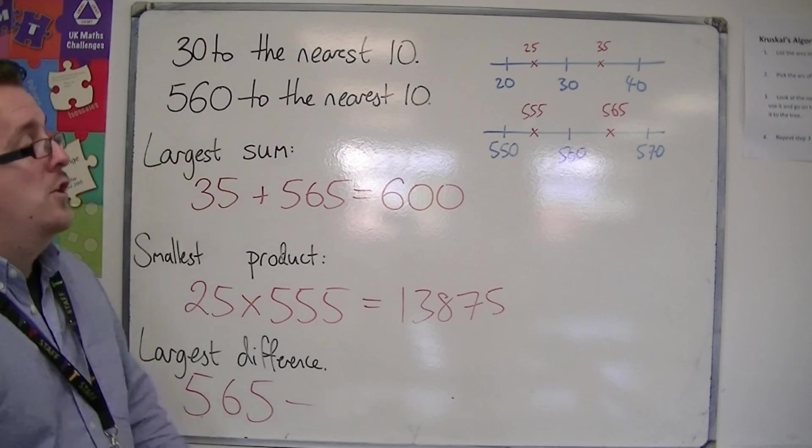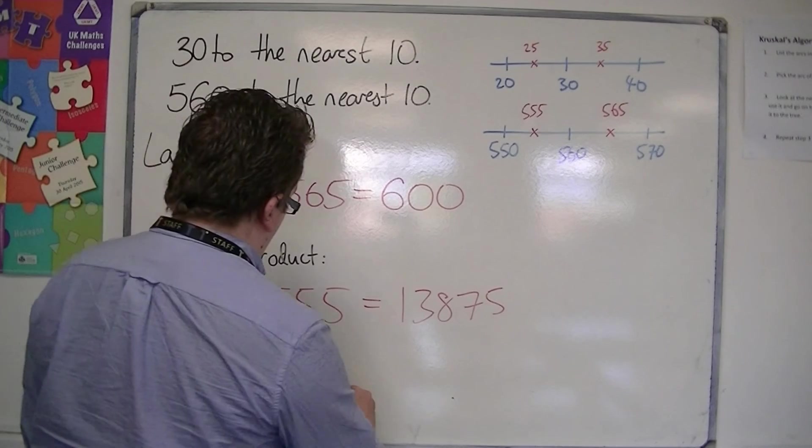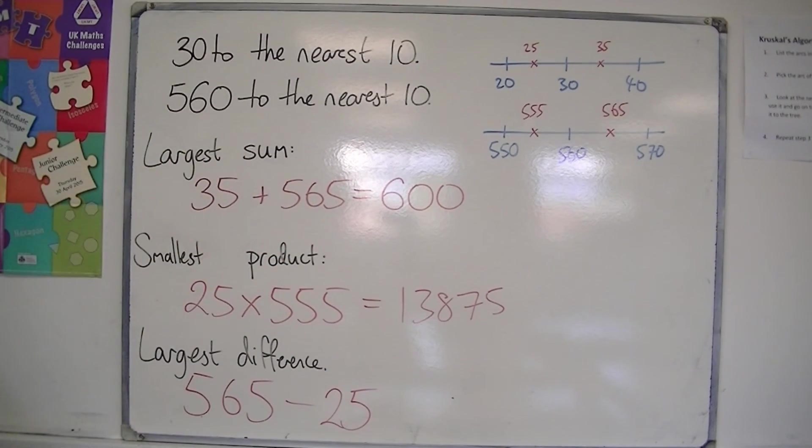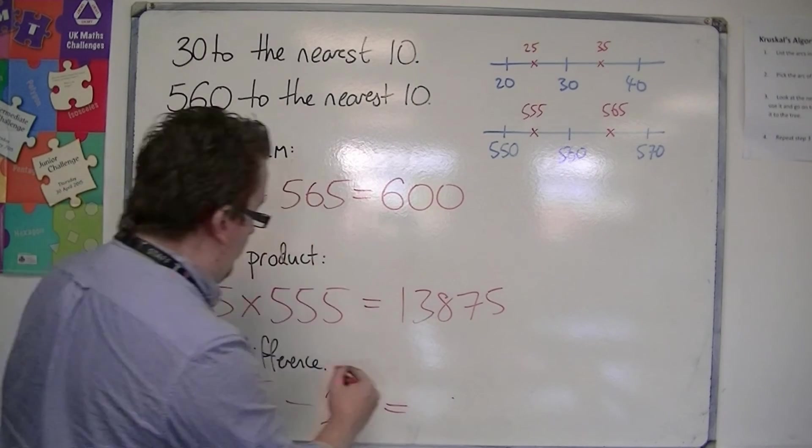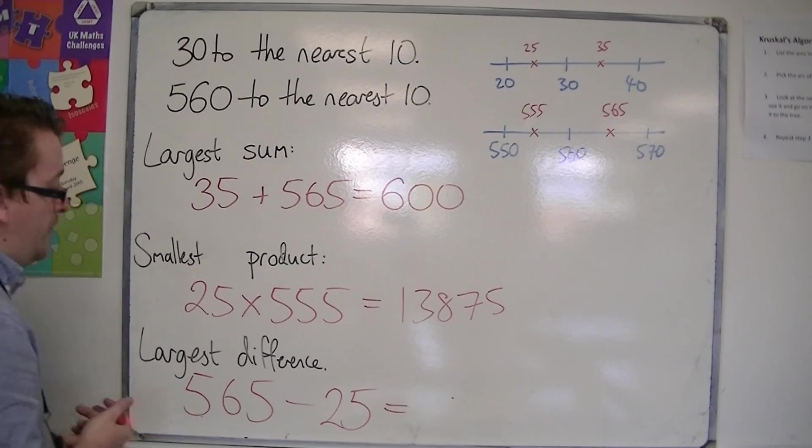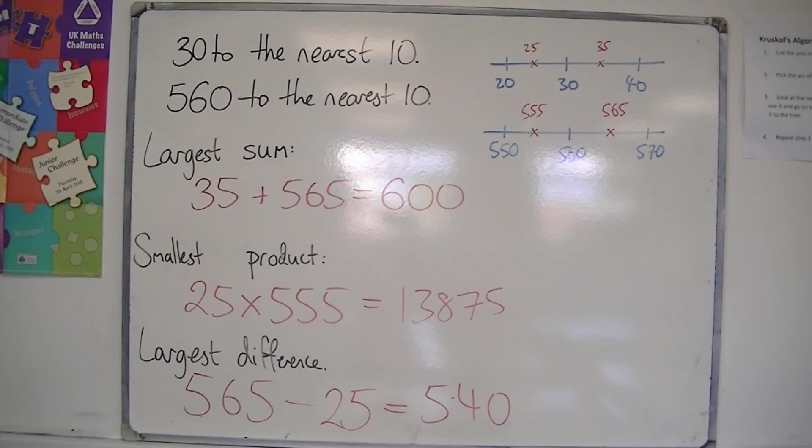And taking away the smallest possible number I could have had of the two, which is the 25. And that will give me the largest possible difference. And difference meaning one subtract the other. So 565 take away 25 is 540. So that would be my largest difference.